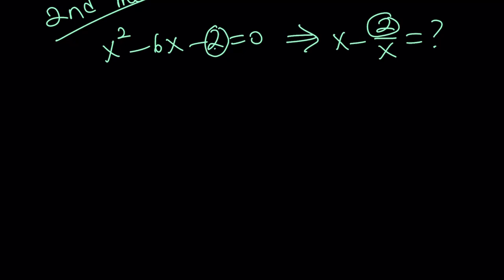Add 6x to both sides and have the x squared minus 2 on the left-hand side. And then, divide everything by x.